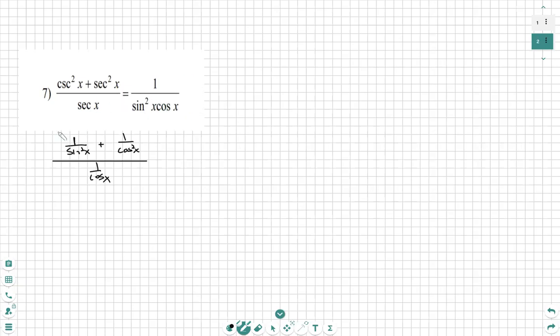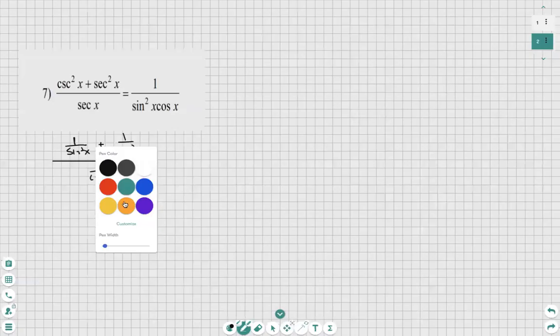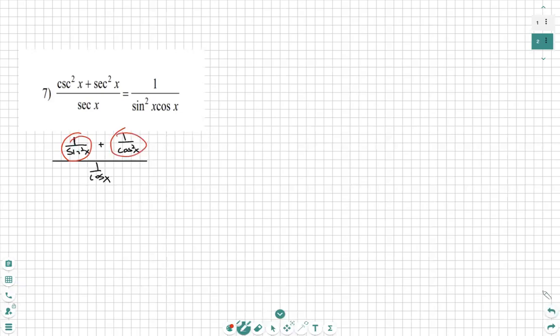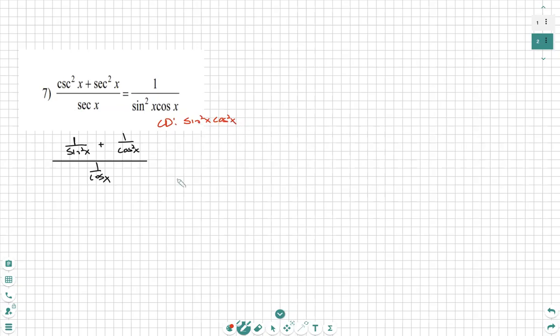But we should be moving forward. I think we have the right idea. When we have two separate fractions with two different denominators of trig functions, we need to combine our fractions. What we need is a common denominator. We can see here that the common denominator would be sine squared times cosine squared.